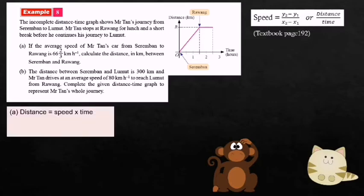As we know, speed equals distance over time. So distance equals speed times time. From the question, the average speed of Mr. Tan's car from Seremban to Rawang is 66 and 2/3 km per hour, and the time we can get from the graph. Here is from Seremban to Rawang, so the time is 1.5 hours. Distance equals 66 and 2/3 km per hour times 1.5 hours. Distance equals 100 km.